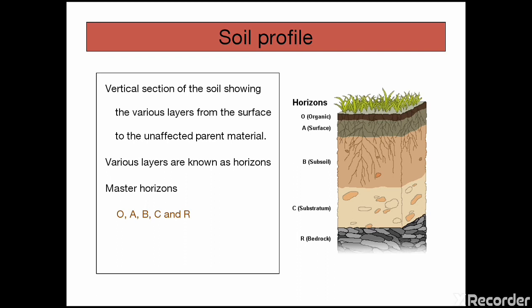So what is a soil profile? It is a vertical section of a soil which shows different layers. These layers are called horizons and we have five horizons namely O, A, B, C and R. These five horizons combine to form master horizons.